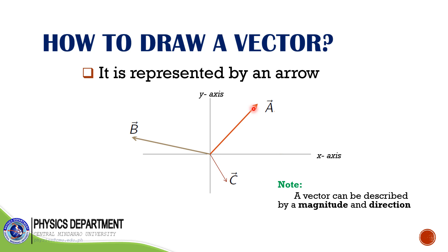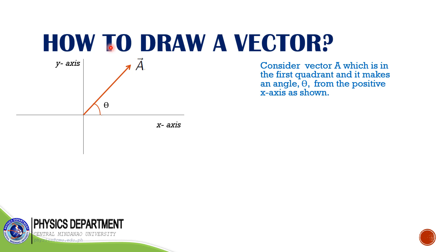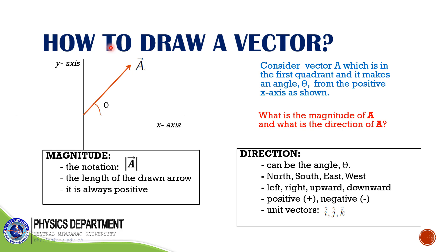Suppose we consider only vector A, which is in the first quadrant and makes an angle theta from the positive x-axis. The question is: what is the magnitude of A and what is the direction of A? For the magnitude, the notation is the absolute value of that vector — so the magnitude of vector A is written as |A|. The magnitude of A is just the length of this arrow; you measure the length of this arrow and you will get the magnitude of this vector. Magnitude is always a positive number.